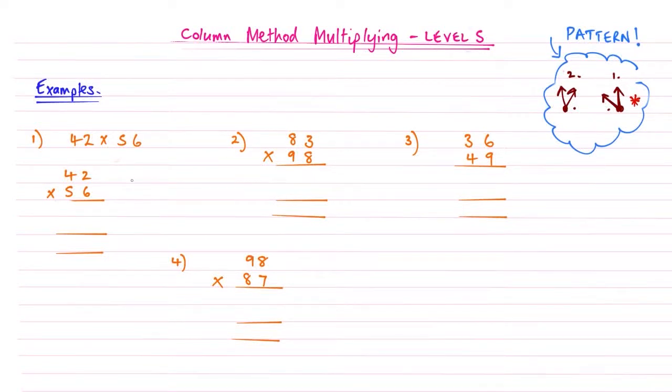Hi, welcome to this video brought to you by Maths from Scratch. This is column method multiplying level 5, the next in the playlist. Level 5 is similar to level 4, however there's going to be a few more carries involved. Let's crack on with it.